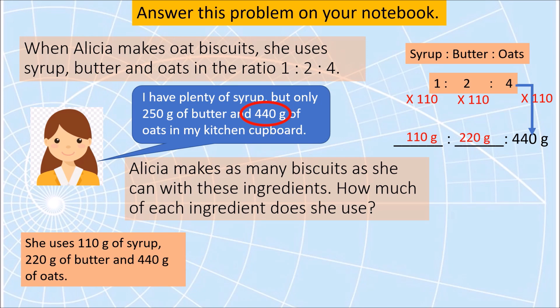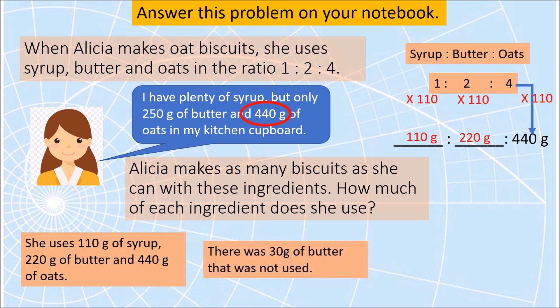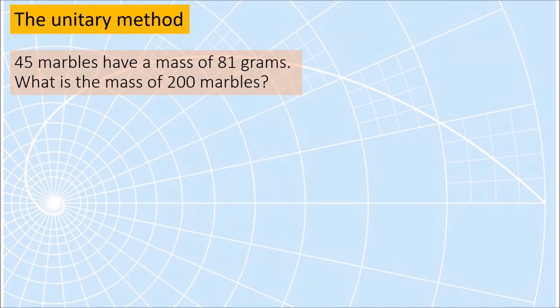Alicia has 250 grams of butter, so it is enough because she needs only 220 grams. In fact she has 30 grams of butter left in her cupboard. Now let us look at this next example where we will use the unitary method. It is a process where we find a unit ratio equivalent to the given ratio — the same as finding the amount for one unit of the quantity.